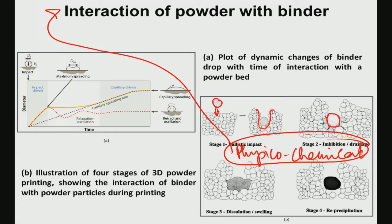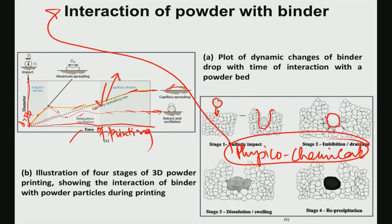Qualitatively, plotting binder droplet diameter versus time of printing shows different variations. In one case, there is a capillary spreading rate where the droplet increases in diameter, giving rise to a capillary-driven process useful for effective binder-powder interaction. In another case, the droplet retracts and oscillates, which does not give rise to effective interaction. The desired behavior is the capillary-driven increase in droplet diameter.